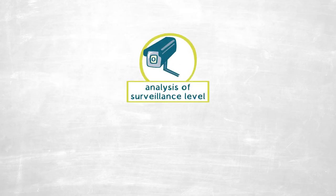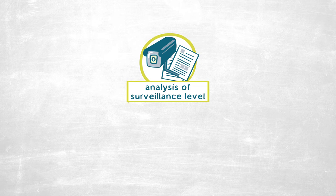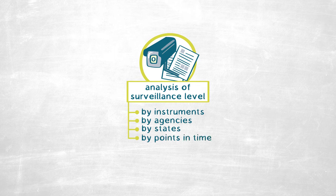The key finding is that something like this can be done. We can construct an instrument that allows us to get a better picture of the general surveillance level in a society, and that allows us to analyze the surveillance level with respect to different surveillance instruments, different agencies, different states, and different points in time. Even now, where we have only processed limited data, we can already see certain things that we would otherwise not see.